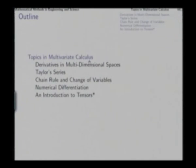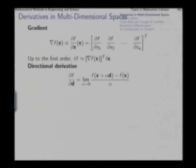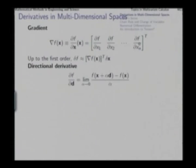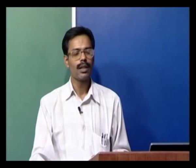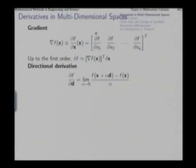The first issue is derivatives in multidimensional spaces. If we have a scalar function f of a vector variable, the first order derivative is the gradient, which has components del f by del x1, del f by del x2, and so on. The n partial derivatives with respect to the n variables x1, x2 up to xn form a vector — a column vector that is the transpose of this row vector — called the gradient.